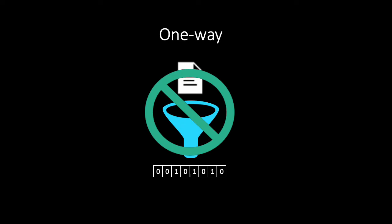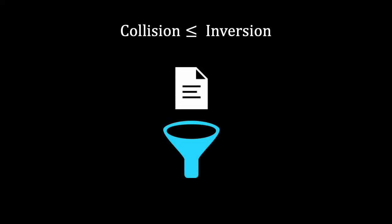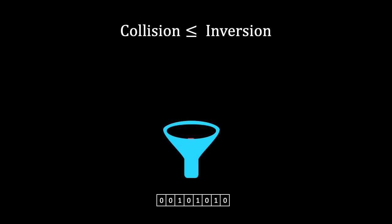Both the one-way and collision-resistant properties can be phrased as computational problems. We can now show that if we can invert a hash function we can also find a collision. To see this let us choose some random value and compute the hash of it. If we invert the function using this hash, it is highly likely that we get a new value that is different from the one we started with.